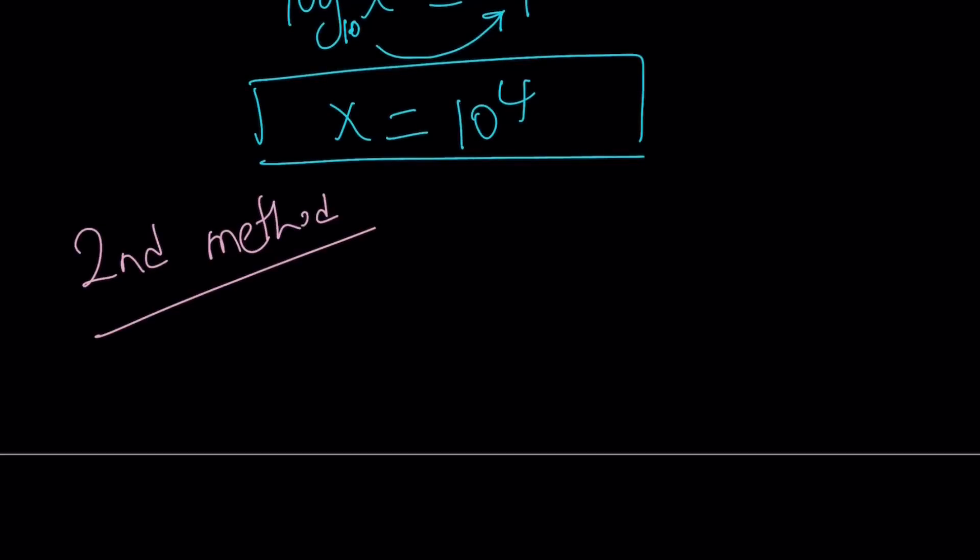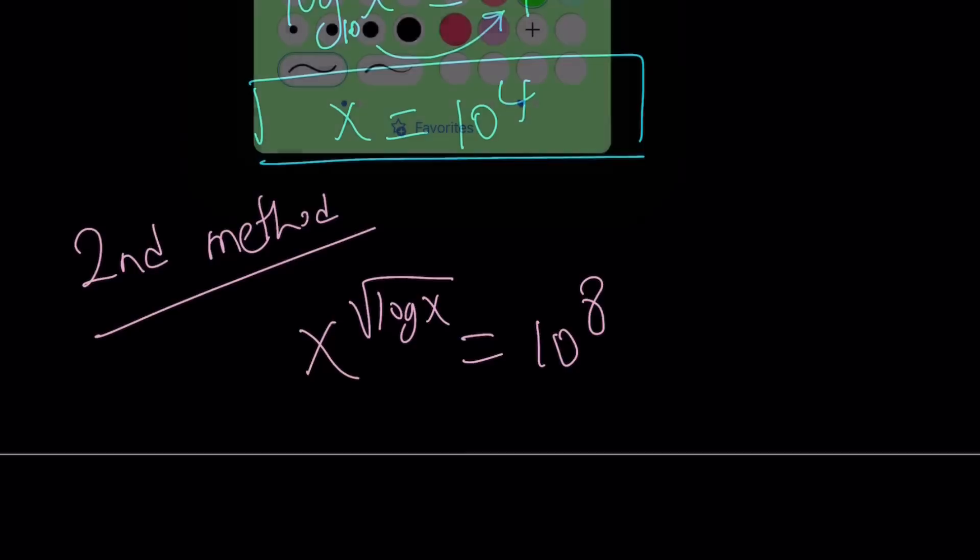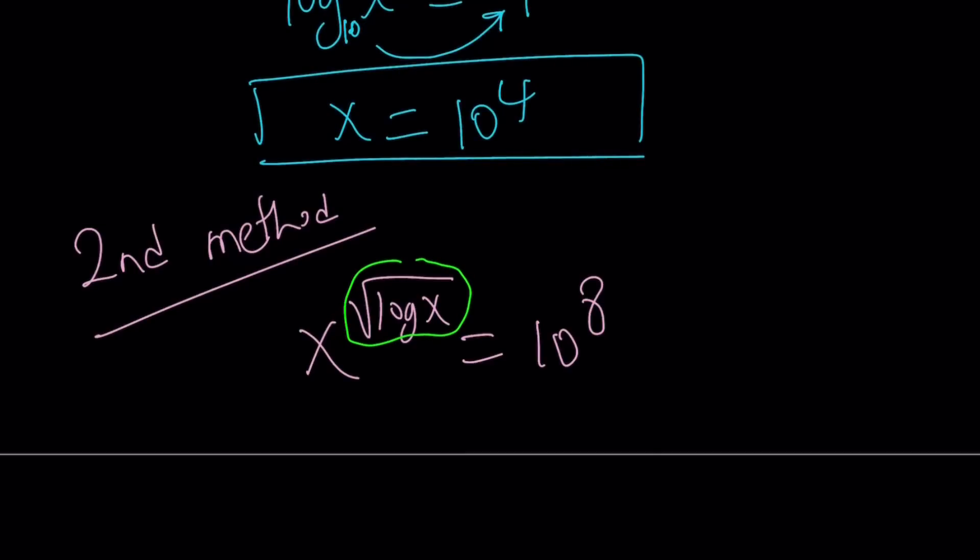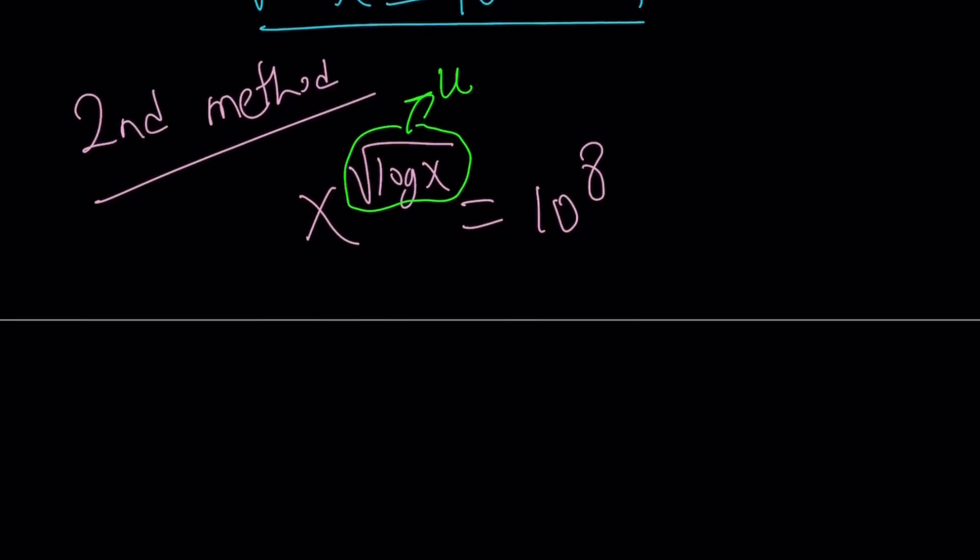My second method is very similar to the first method, because we're solving the same problem. But it's kind of different too. How? We're going to use substitution. And substitution is fun. Okay, so let's go ahead and take this confusing expression and call it something. How about calling that u? So now, we called square root of log x equals u. This implies log x equals u squared.